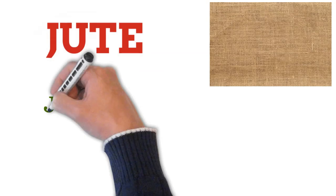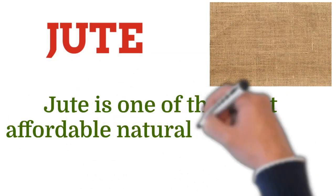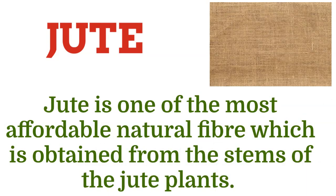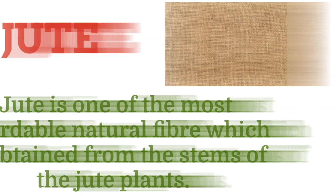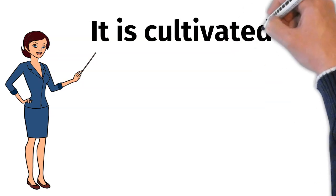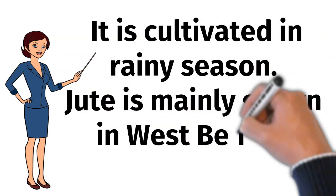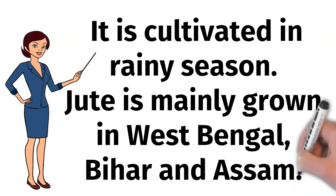Jute. Jute is one of the most affordable natural fiber which is obtained from the stems of the jute plants. It is cultivated in rainy season. Jute is mainly grown in West Bengal, Bihar and Assam.